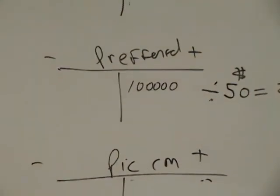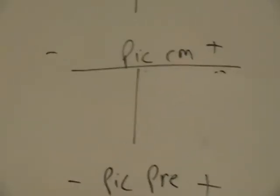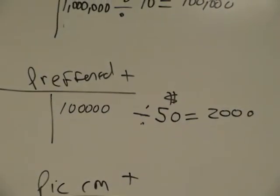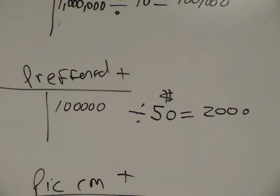So then we gotta look at the preferred stock is paying 7%. How many preferred stock did they issue? You're saying 2,000 shares of preferred stock? 2,000 shares. Okay, $100,000. Alright, so $100,000 times 7% is how much? 7,000.